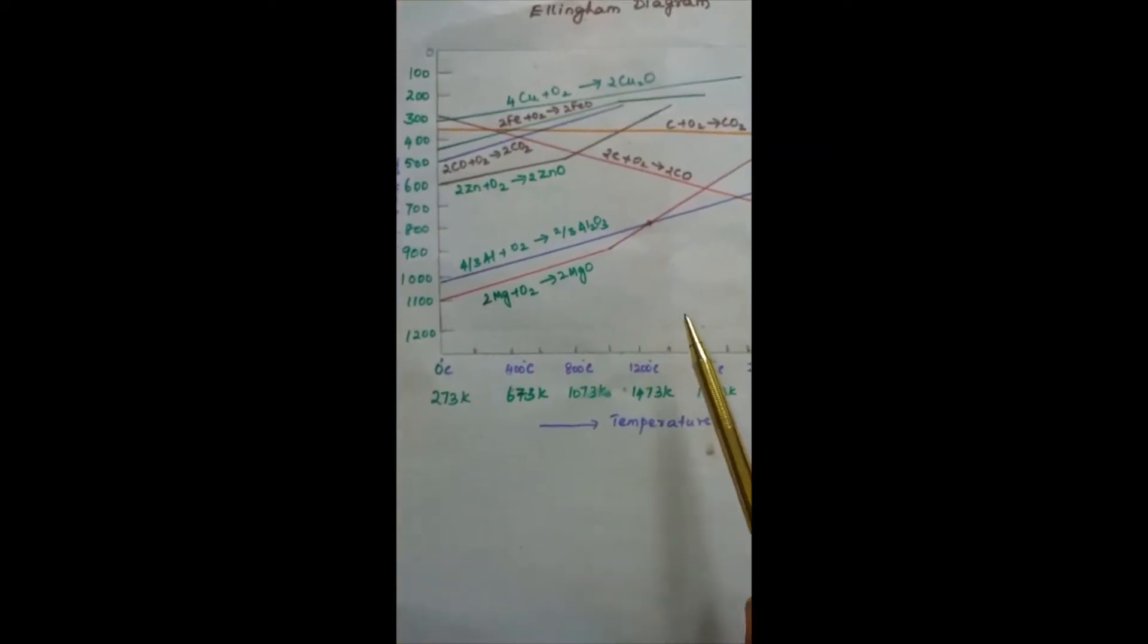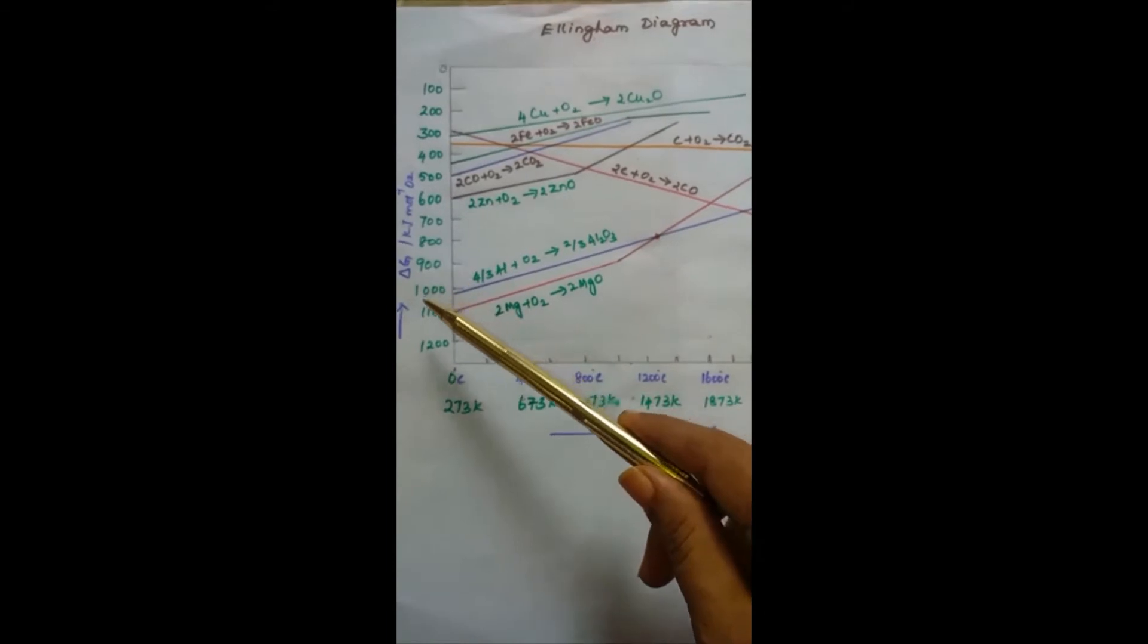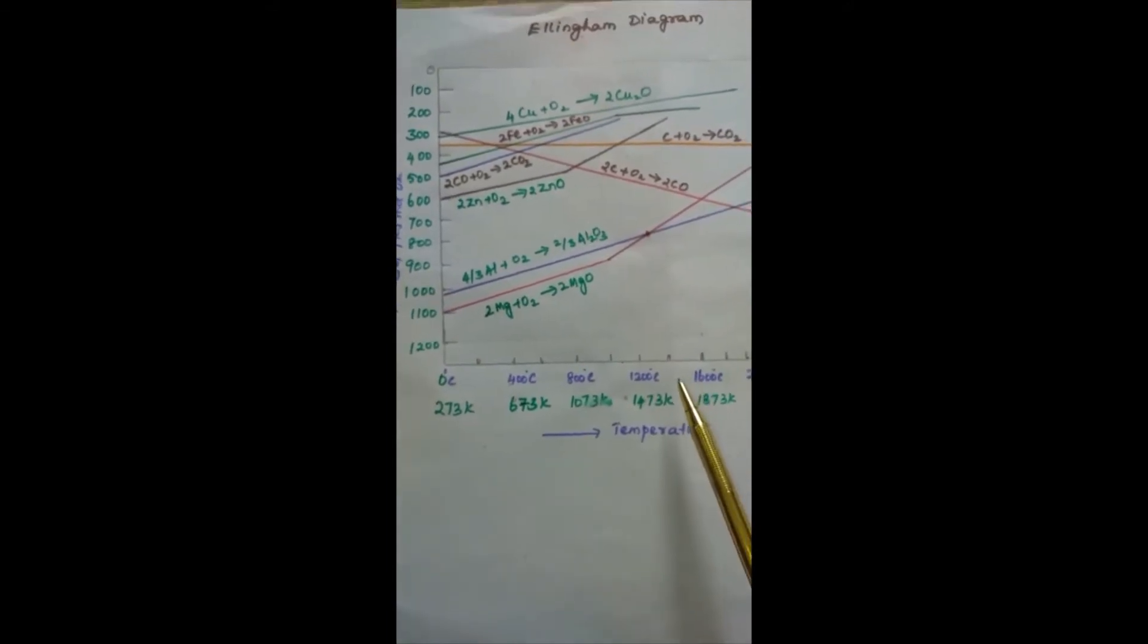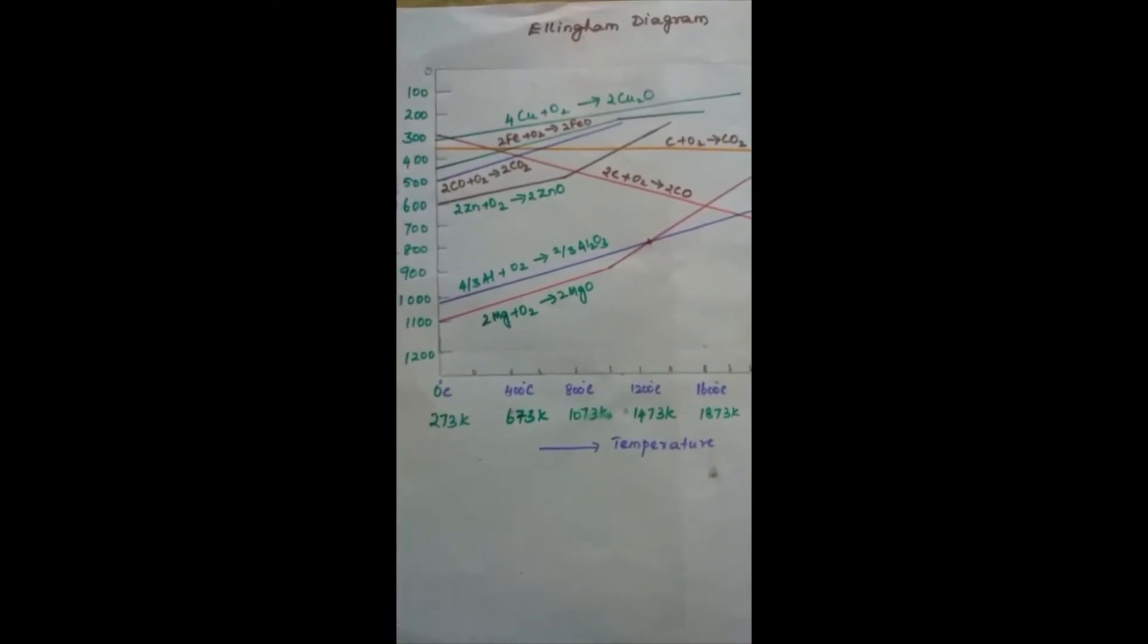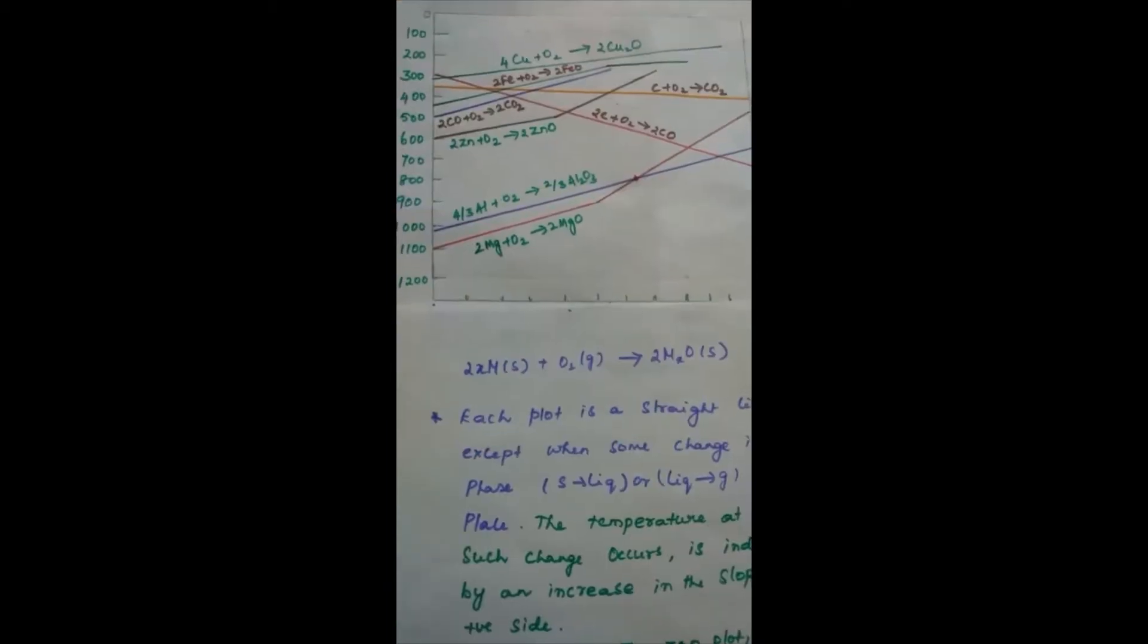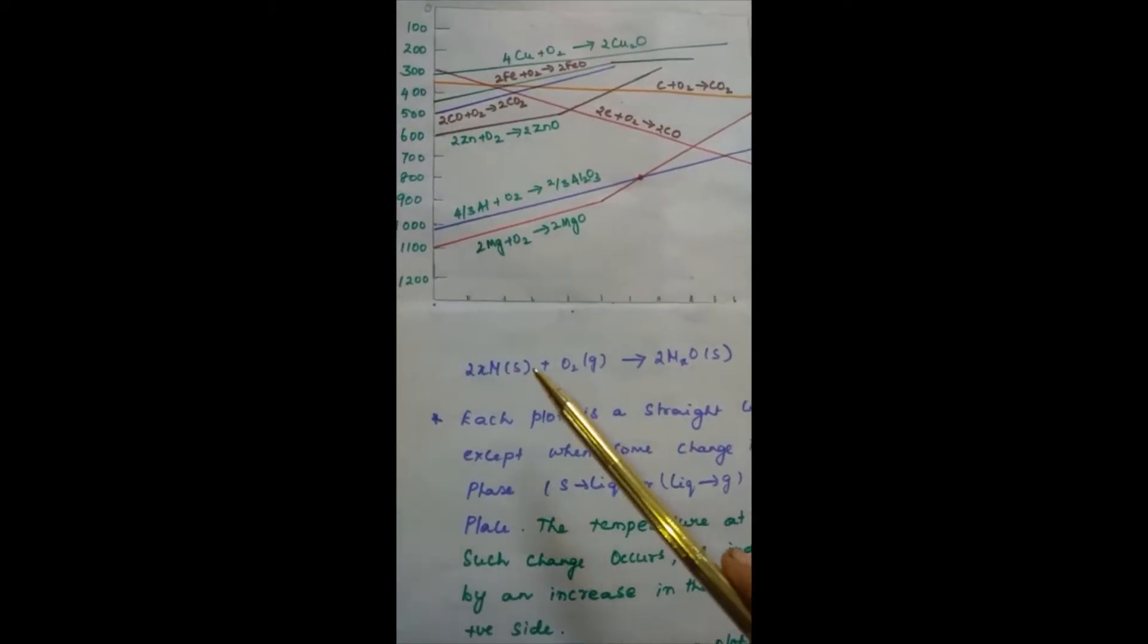Ellingham Diagram normally consists of plots of delta G versus T for formation of oxides of elements. That is, for the reaction M plus O2 gives MxO.